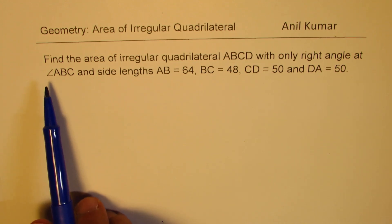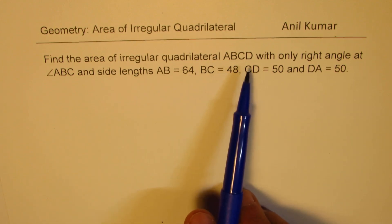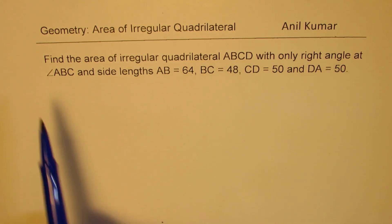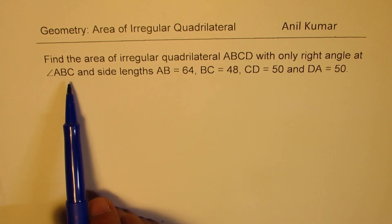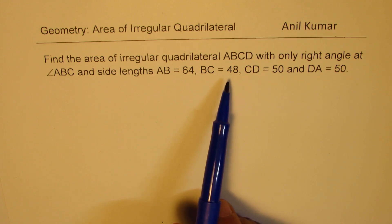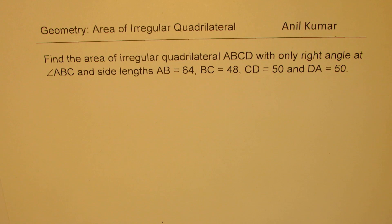The question here is, find the area of irregular quadrilateral ABCD with only right angle at angle ABC and side lengths AB equals to 64, BC is 48, CD equals to 50, and DA equals to 50.